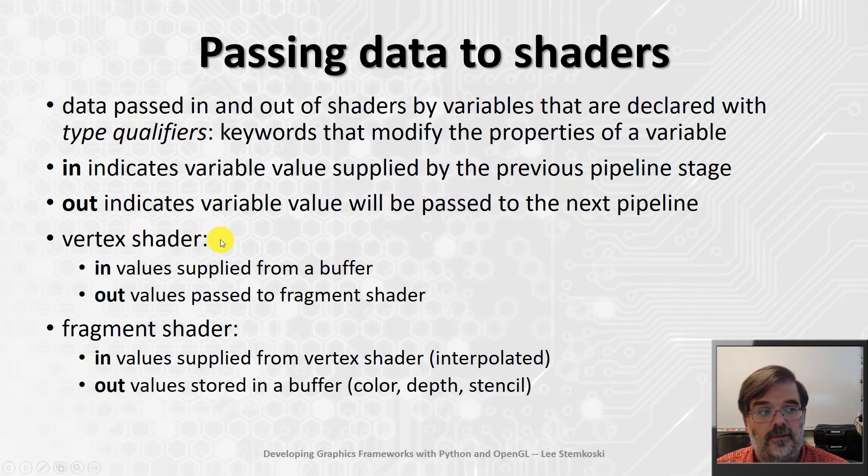In particular, the two types of programs you're going to be writing are vertex shaders and fragment shaders. In the context of a vertex shader, in means that the values for an in variable will be supplied from a vertex buffer. In the context, again, of a vertex shader, an out variable indicates that those values will be passed along to the fragment shader.